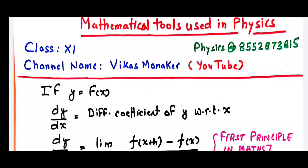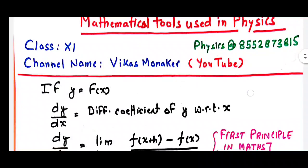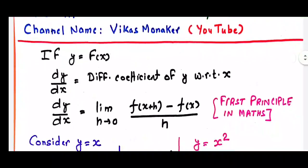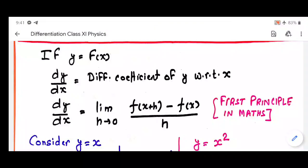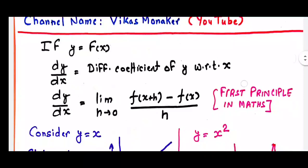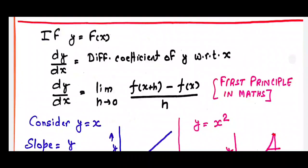We'll start with differentiation. If y is a function of x, then dy upon dx is known as the differential coefficient of y with respect to x. Mathematically it is written as: limit h tending to 0 of [f(x+h) minus f(x)] upon h. If you put h equal to 0 you get 0 upon 0. This is known as the first principle in mathematics.